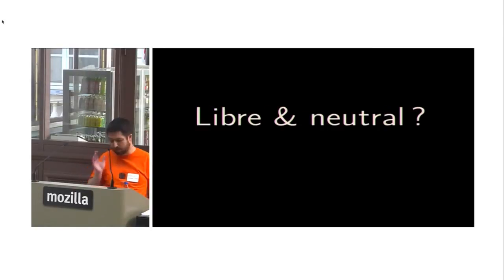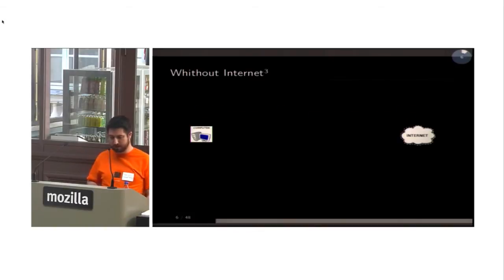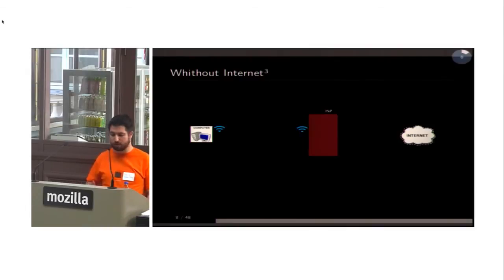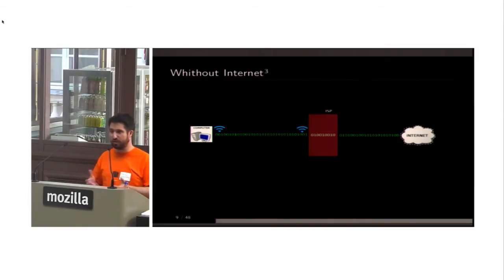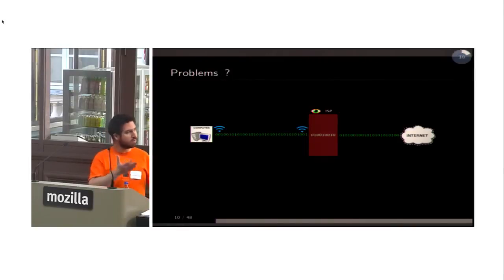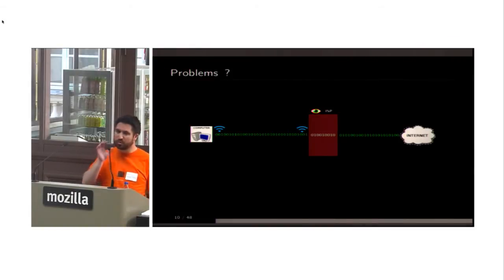Today at big commercial ISPs, if you ask about libre and neutral, the answer is no — it's not neutral, and about free software you can forget it. Without the Internet Cube, when you connect to the Internet you go through your ISP. The ISP is the single point of censorship — the easiest point to spy on you, gather data, use your personal data, and interfere with it.